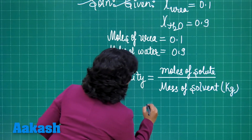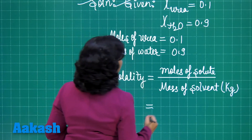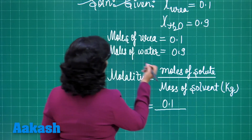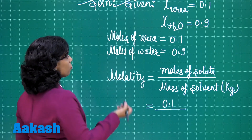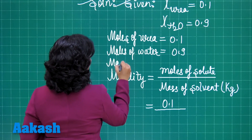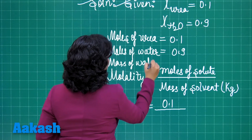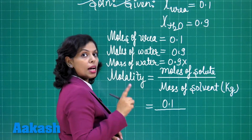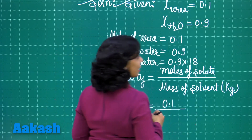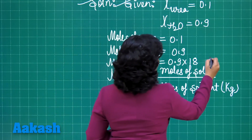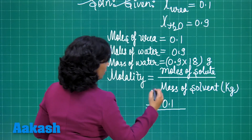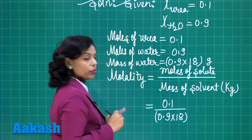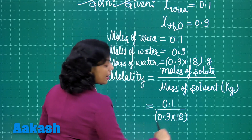We need to find out molality. Moles of the solute — solute is urea — its moles are already given as 0.1, divided by the mass of the solvent. We have the moles of water; the mass of water equals moles multiplied by its molar mass, which is 18 grams per mole. So the mass of water is 0.9 × 18 grams. But we need this value in kg, so divide by 1000.